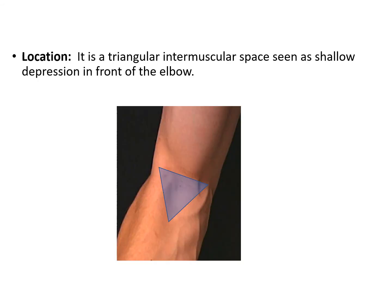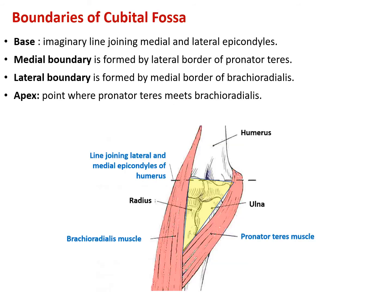What is cubital fossa and where exactly is it located? Cubital fossa is a triangular intermuscular space which is seen as a shallow depression in front of the elbow. As cubital fossa is a triangular intermuscular space, it will have a base, an apex opposite to that, and two other sides of the triangle.